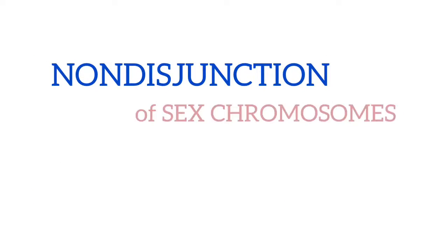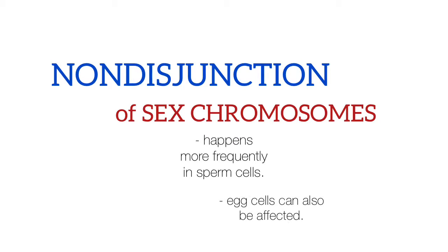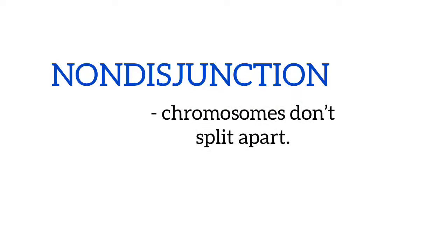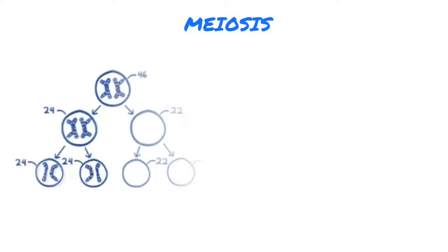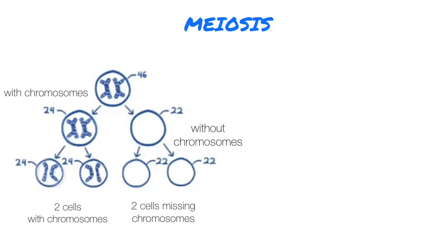This can happen as a result of non-disjunction of sex chromosomes, and happens more frequently in sperm cells, but egg cells can also be affected. Non-disjunction means the chromosomes don't split apart. Following meiosis, one resulting cell ends up with both chromosomes and the other gets none, giving a final result of two cells with X chromosomes and two cells missing chromosomes.